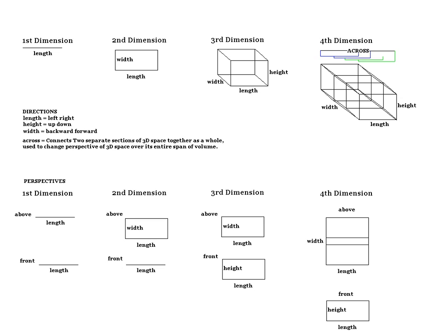In the first dimension, we have directions left and right. In the second dimension, we have backward-forward-left and right.